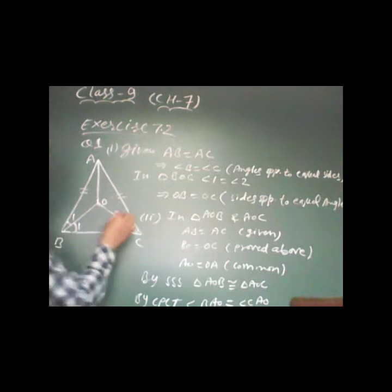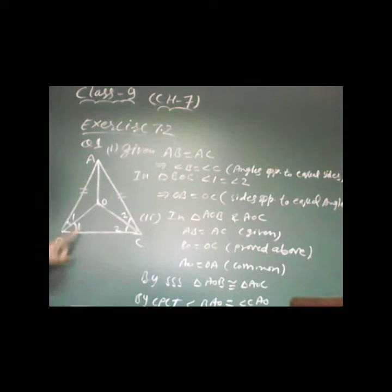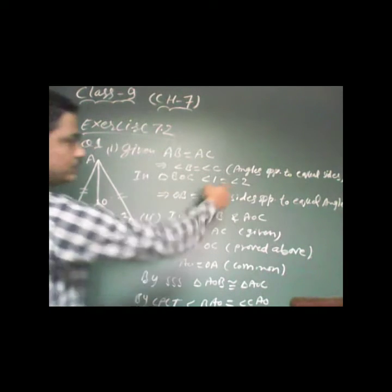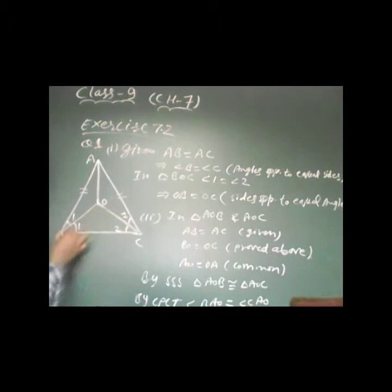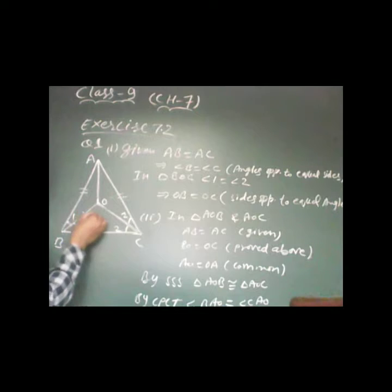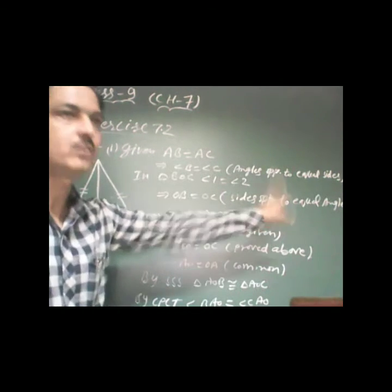By giving numbers to the angles it is very easy to explain and understand. So angle 1 is equal to angle 2. Therefore in triangle BOC, if angle 1 is equal to angle 2, then BO is equal to OC, because sides opposite to equal angles are also equal.